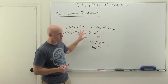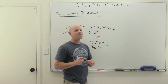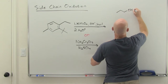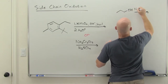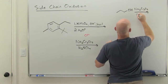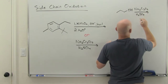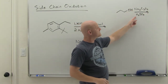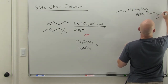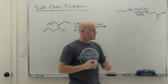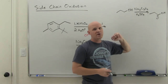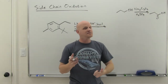Before we dive into side-chain oxidation, I just want to remind you of the oxidation of a primary alcohol. With a primary alcohol, we learned that with chromic acid or PCC we could oxidize it. PCC might stop at the aldehyde, but with chromic acid — represented as sodium or potassium dichromate with sulfuric acid — we oxidize it two steps, going right past the aldehyde all the way to a carboxylic acid. You wouldn't be able to isolate the aldehyde intermediate. So two steps of oxidation, all the way to a carboxylic acid.